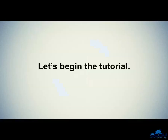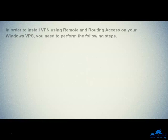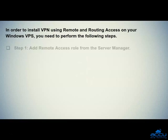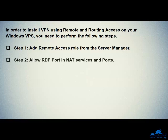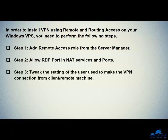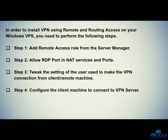Let's begin the tutorial. In order to install VPN using Remote and Routing Access on your Windows VPS, you need to perform the following steps. Step 1: Add remote access role from the server manager. Step 2: Allow RDP port in NAT services and ports. Step 3: Tweak the setting of the user used to make the VPN connection from the client remote machine. Step 4: Configure the client machine to connect to VPN server.